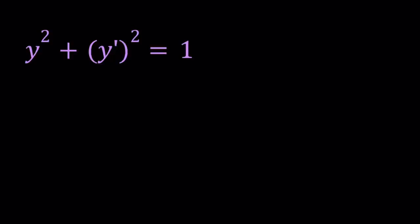I want you to notice that we're adding two squares and the result is 1. I'm going to be presenting two methods here, and one of the methods is going to involve the fact that the sum of two squares equals 1. Let's start with the first method.